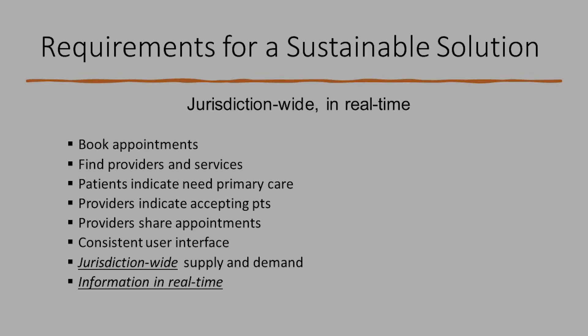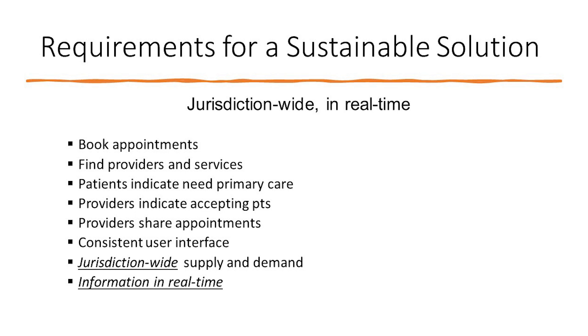We came up with some requirements for a sustainable solution that we think should be jurisdiction-wide and in real time. We think everybody in the system, including providers and patients, should be able to book appointments throughout the system and find those providers and services. Patients should be able to indicate whether they need a primary care provider, providers should be able to indicate whether they're accepting patients, and providers should be able to share their availability of appointments. Everybody needs a consistent interface, with jurisdiction-wide access to supply and demand — and of course, in real time.